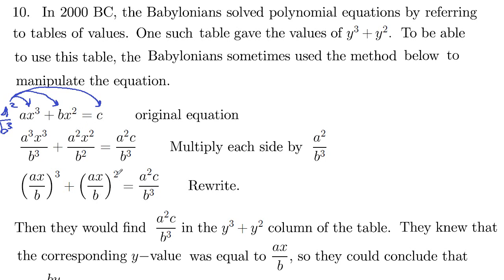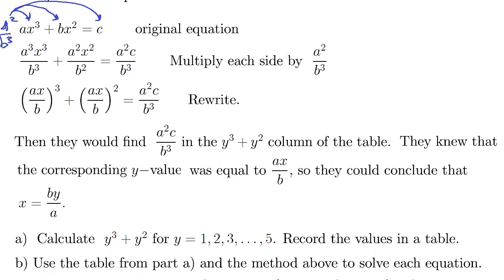So then what they would do is they would find the right hand side here of this rewritten equation, this manipulated equation, find that a squared c over b cubed in the y cubed plus y squared column of the table. And then they knew that the corresponding y value that that came from was ax over b, because this is y cubed plus y squared on the left hand side.